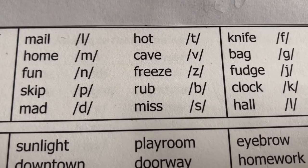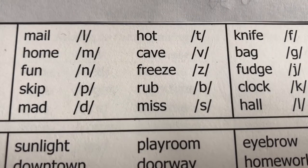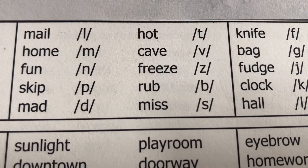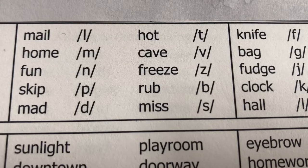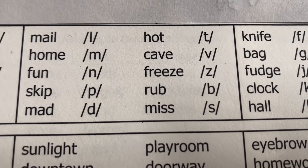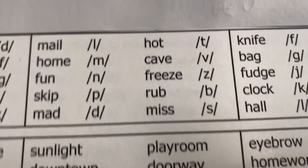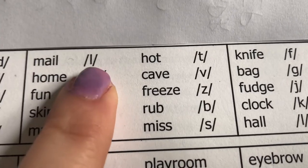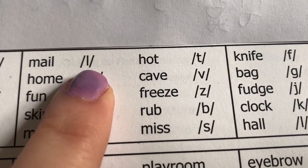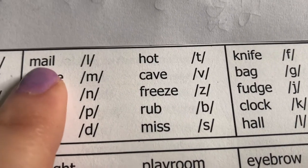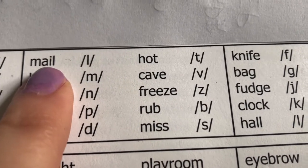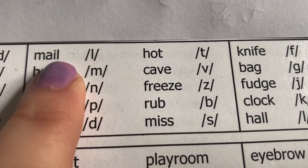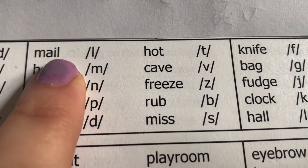Now we are looking for our ending sounds in our words. I'm going to say the word, the student would repeat the word and then identify the final sound. Male — Luh. So your child would say Male — Luh, because that is the last sound you hear in the word male.